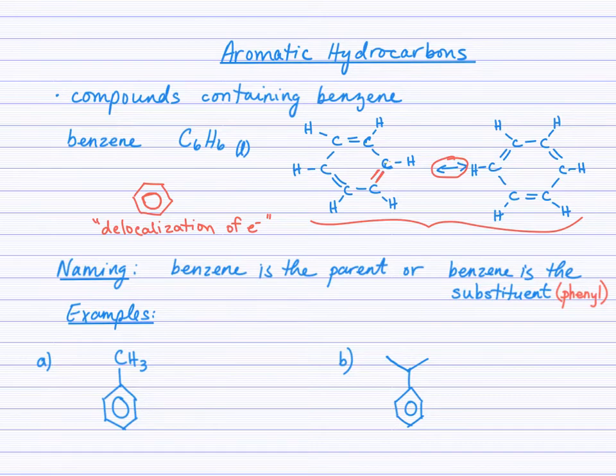So, we're going to build on all of the principles we've been learning, and really, for naming benzene, you just need to have it in your mind that benzene is either the parent, the parent chain or the parent hydrocarbon, or it's going to be the substituent. And if it is the side group, if it is the substituent, then you need to call it phenyl. I know it might make more sense to think of that as benzyl, but in fact, it is phenyl.